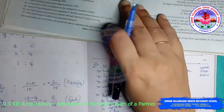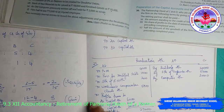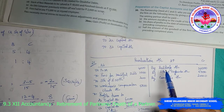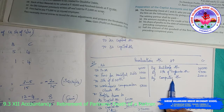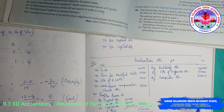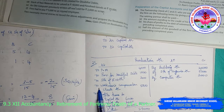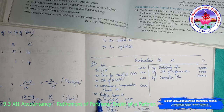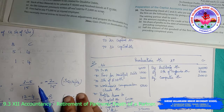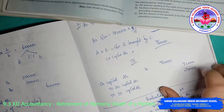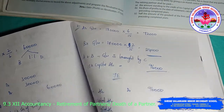They are also asking us to prepare the journal entry. For the increases in asset values: building account debit, stock of finished goods account debit, computer account debit — to revaluation account 27,000. Then A's capital account, B's capital account — to revaluation account for profit distribution.